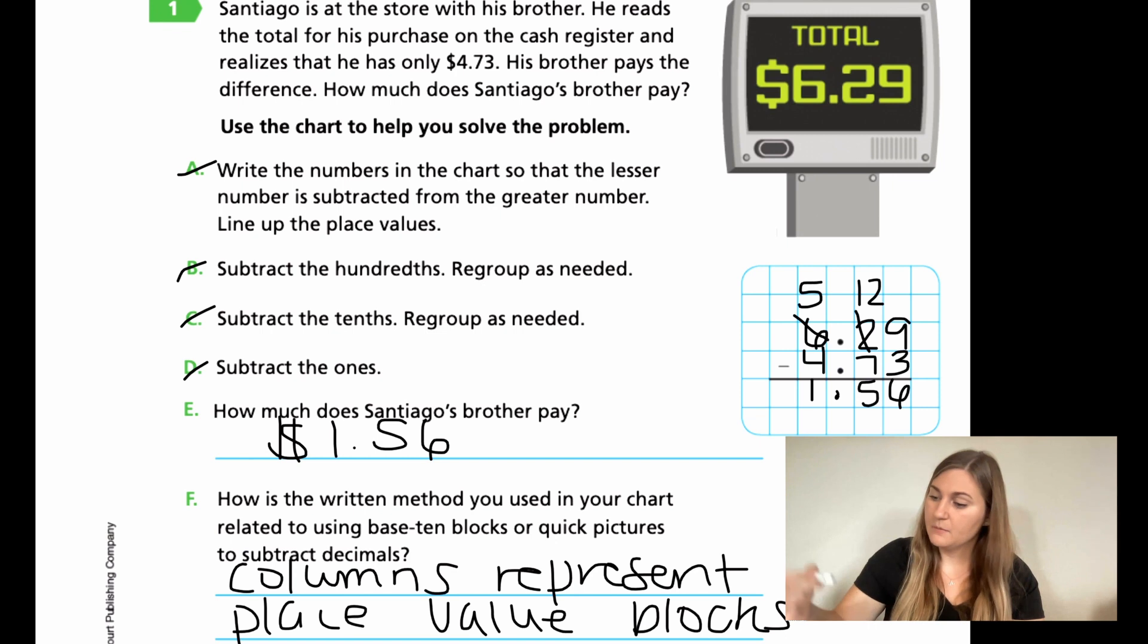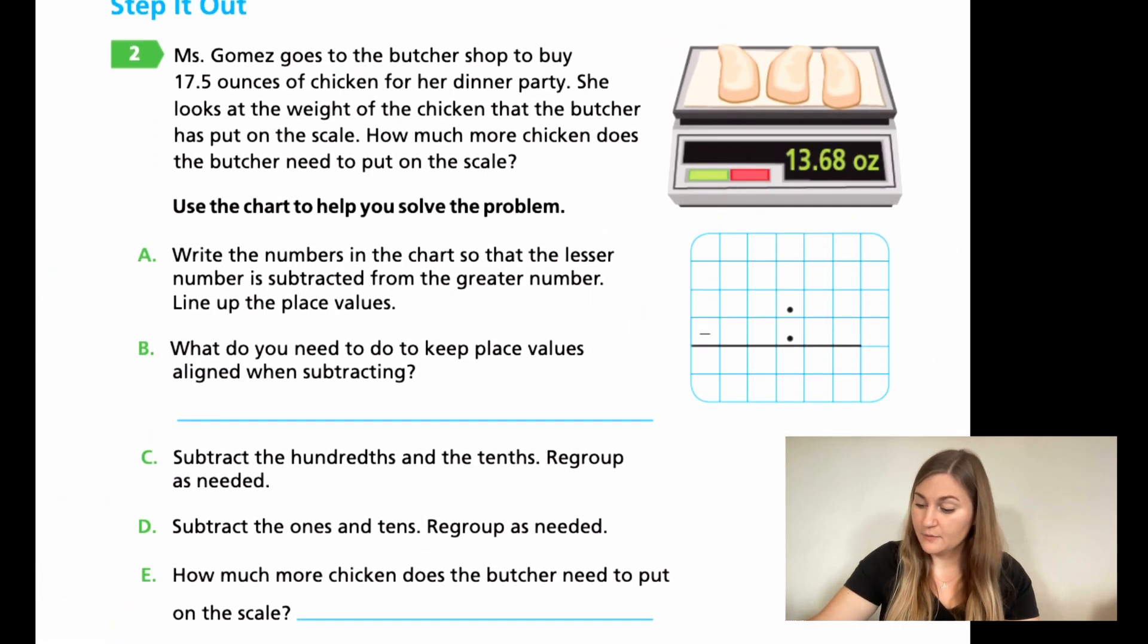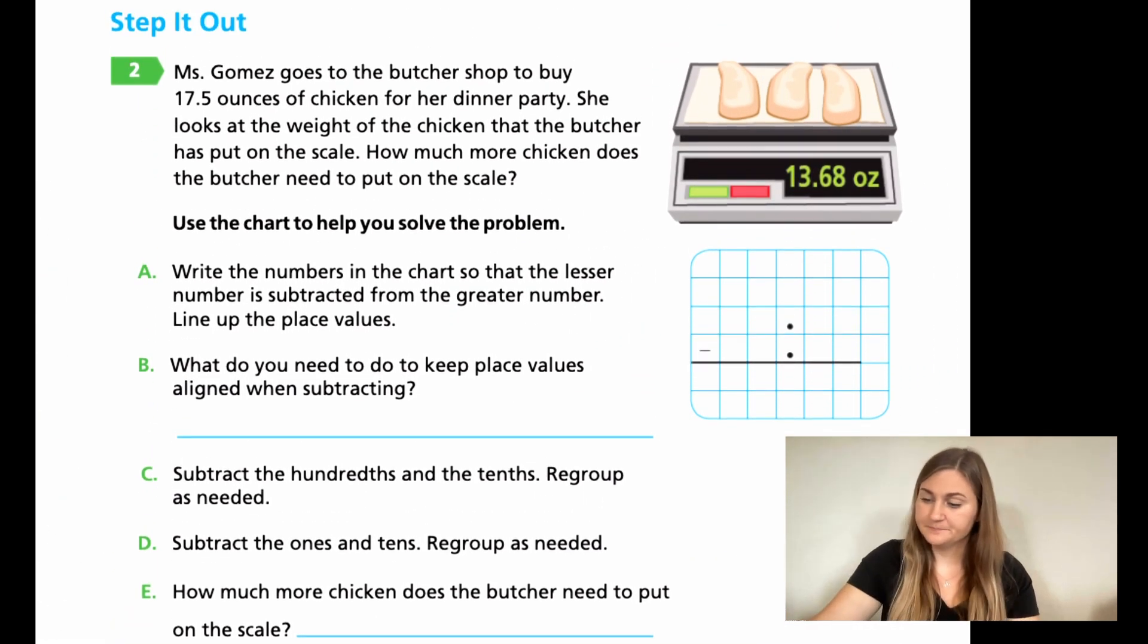Alright, moving on to the next page. Now we're on 356. Number two says, Miss Gomez goes to the butcher shop to buy 17.5 ounces of chicken for her dinner party. She looks at the weight of the chicken that the butcher has put on the scale. How much more chicken does the butcher need to put on the scale? So she needs 17.5. This scale says 13.68. How much more do we need?